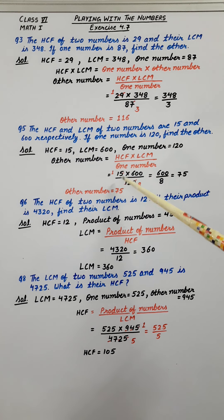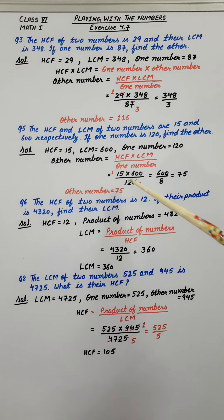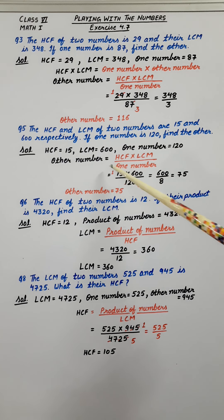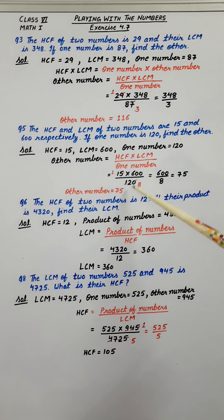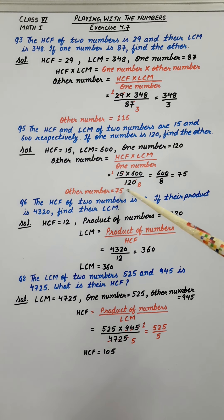HCF is 15, multiplied by LCM which is 600, upon one number which is 120. Now 15 and 120 are both divisible by 15 — 15 ones and 15 eights. What is left is 600 upon 8, and they are both divisible by 8. So the result is 75. The other number is 75.